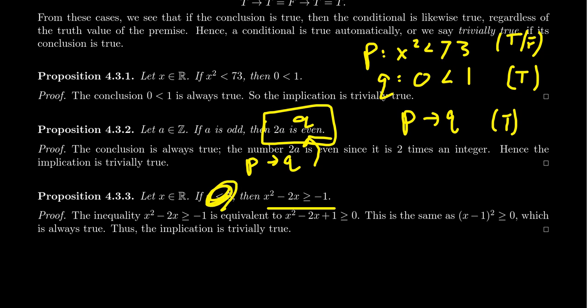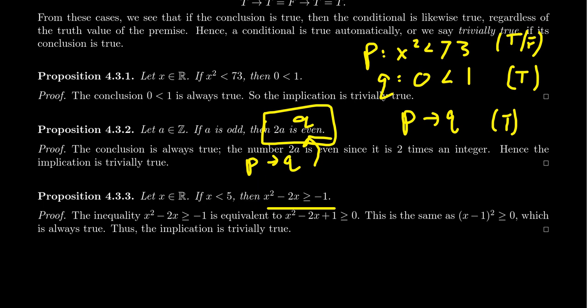In situations like this, if you prove something is true without using a hypothesis, that is a valid proof. But in mathematical writing, if you didn't use a hypothesis, you typically remove it. You can strengthen the statement by removing unnecessary hypotheses. Better mathematical writing happens by removing unnecessary hypotheses, even if logically the statement is still true with them.